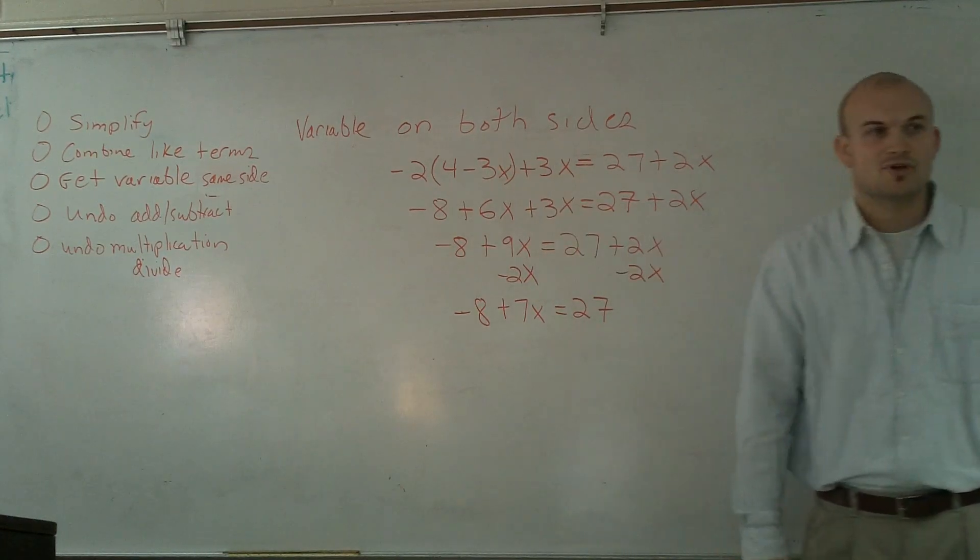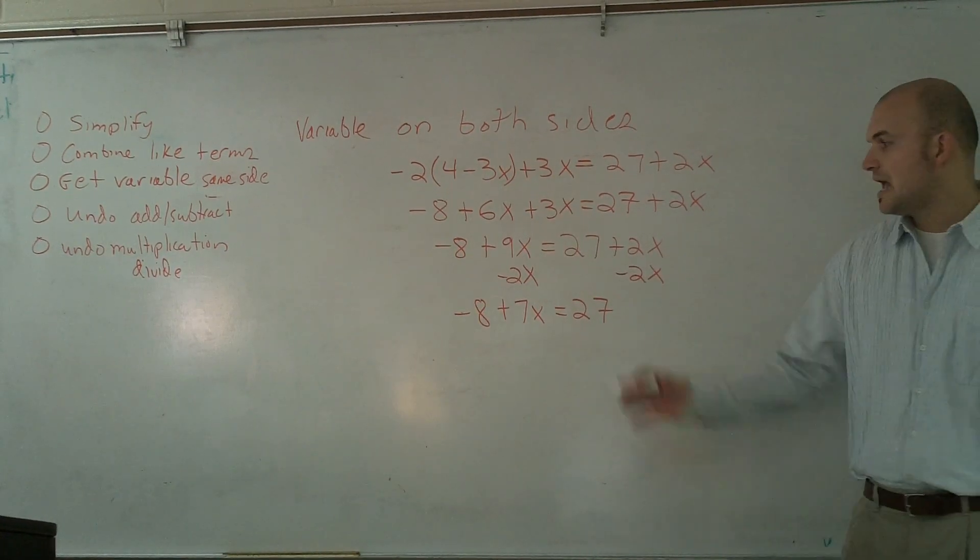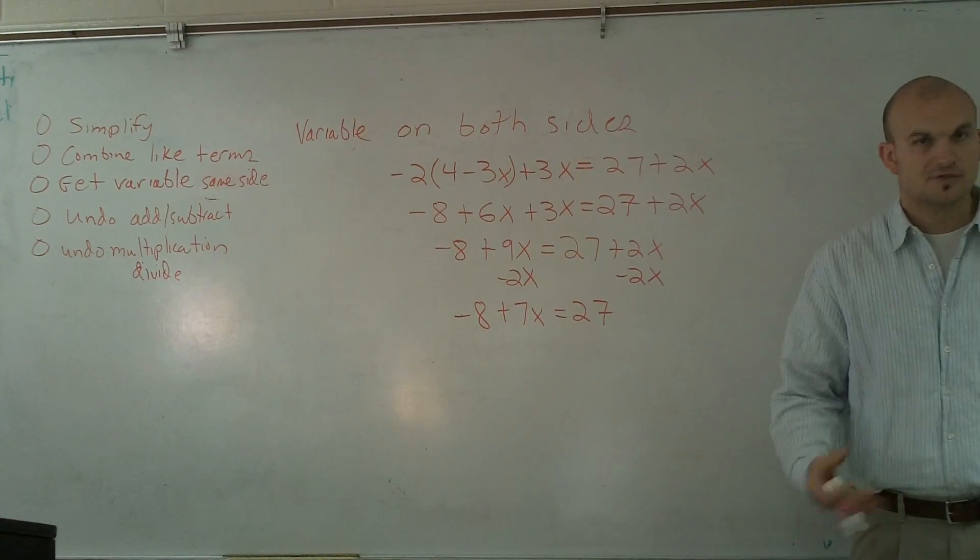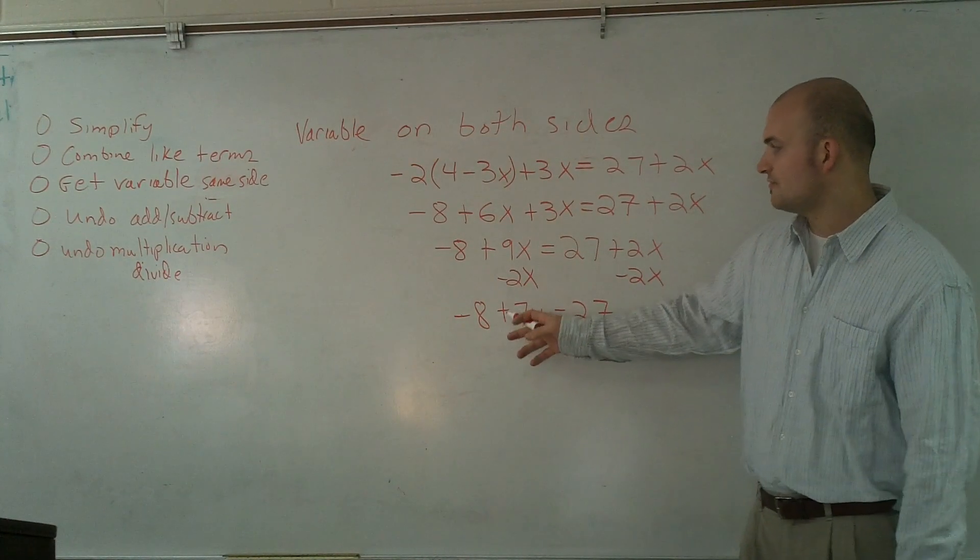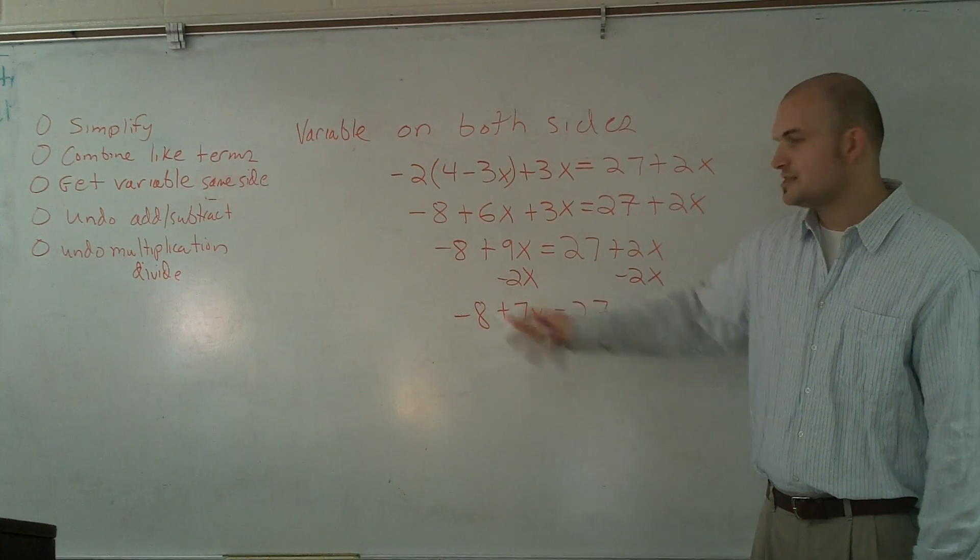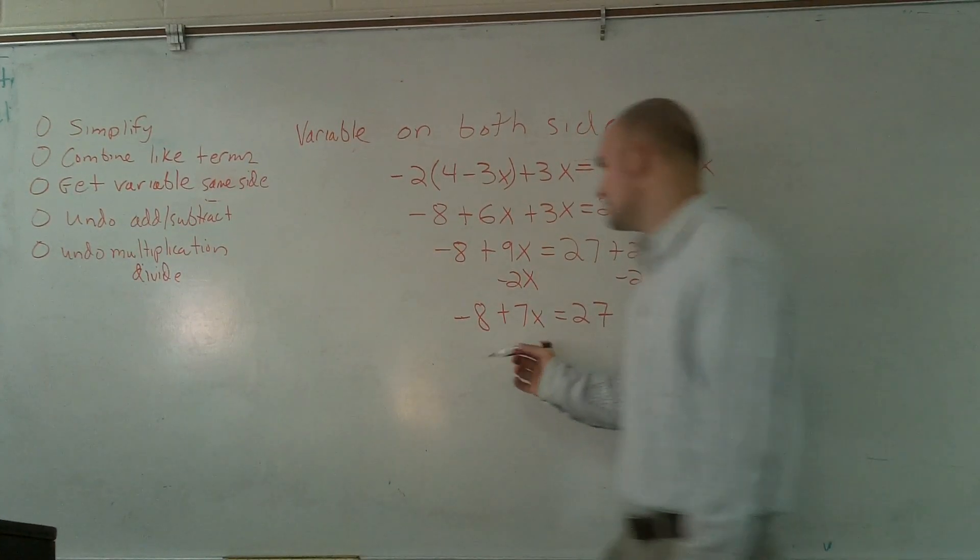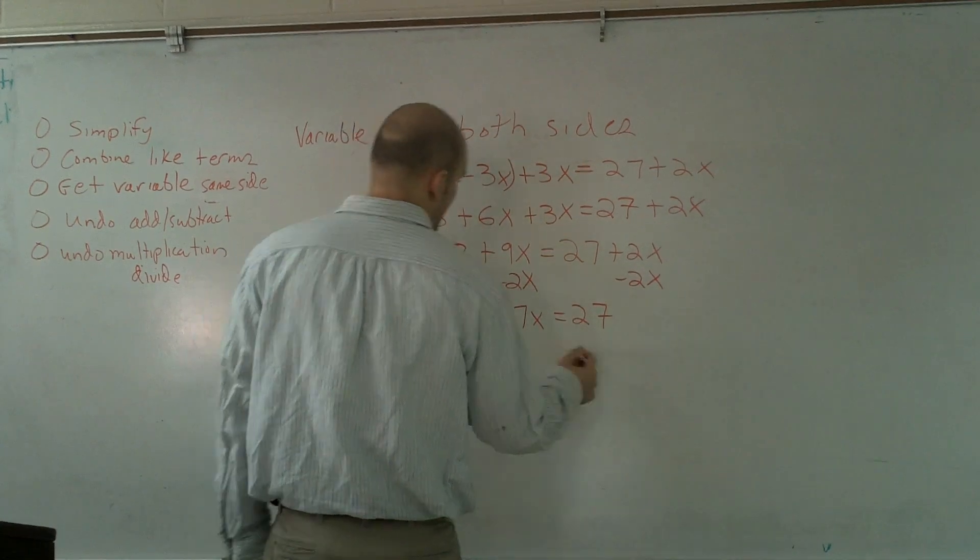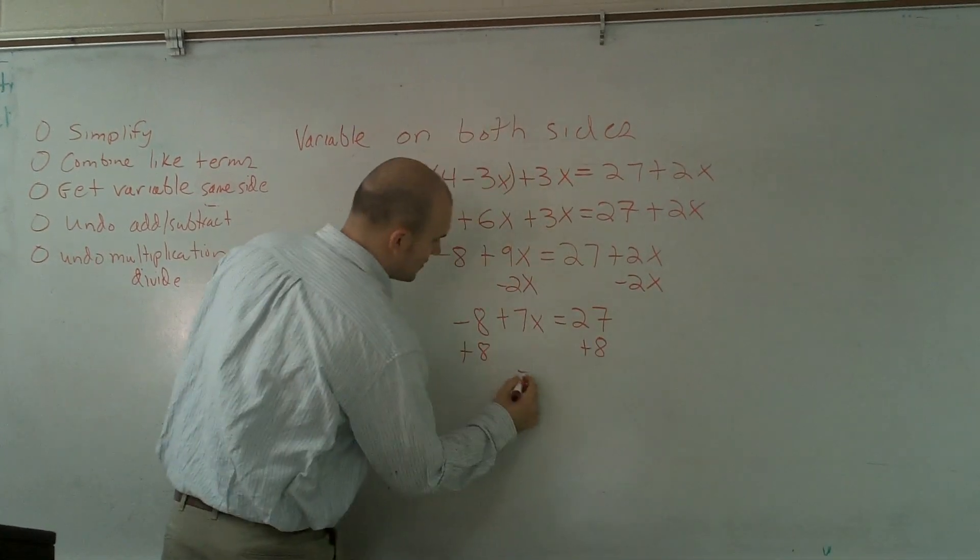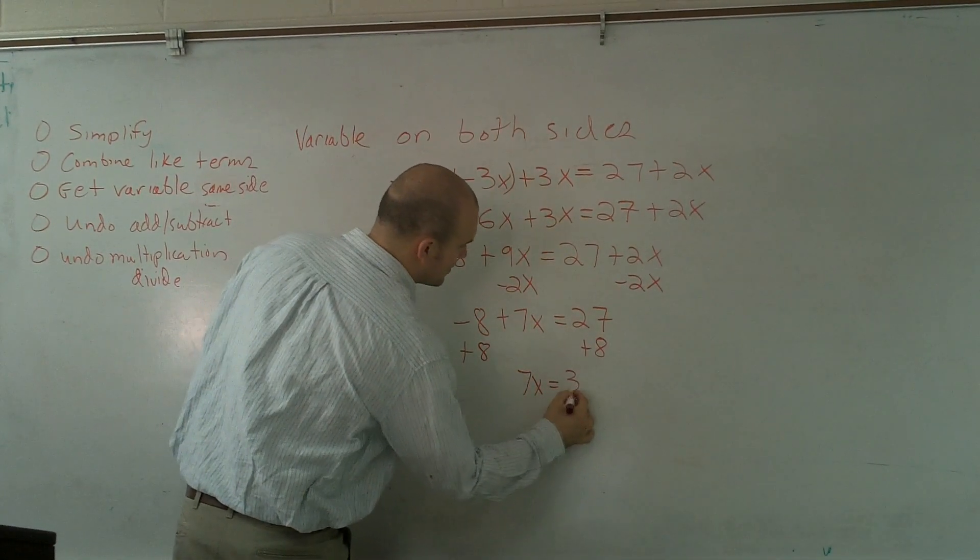You undo addition and subtraction by using the inverse operations, and then you're going to undo multiplication and division by using the inverse operations. The first thing I notice is my variable is being subtracted by 8. To undo that, I'm going to add 8. I'm going to do that to both sides. Therefore, I'm left with 7x equals 35.